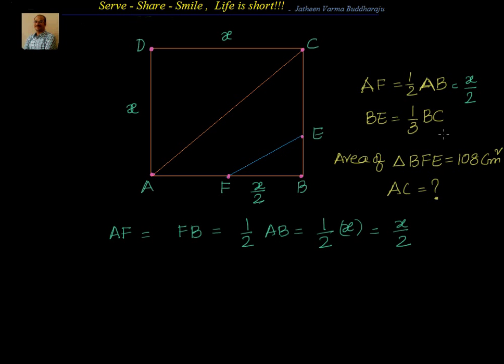Now what is BE? BE equal to one third of BC, but BC is also X. So let's write it down. We will say BE equal to one third of BC, that's equal to one third of X, which is equal to X by 3. So we got BE equal to X by 3.